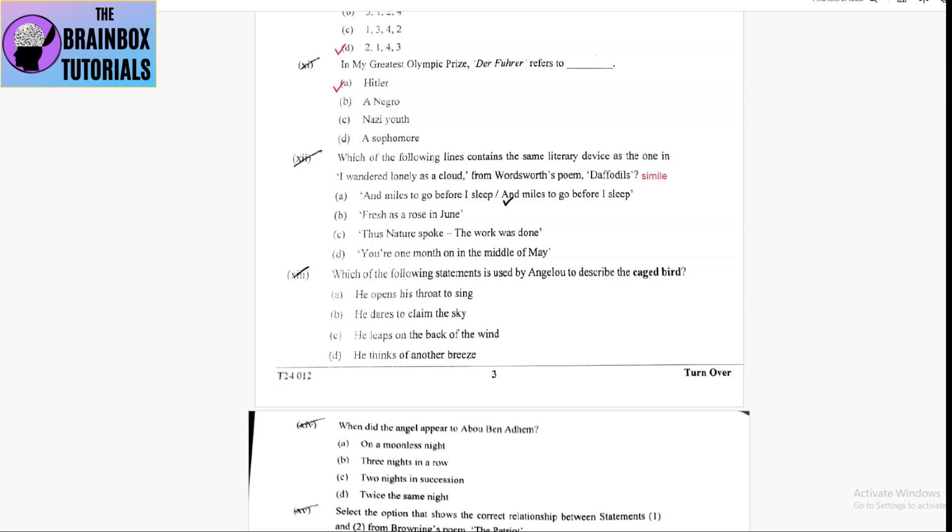Number A, and miles to go before I sleep and miles to go before I sleep. This is refrain. Number B, fresh as a rose in June. Clearly, this is a simile. Something is as fresh as a rose.